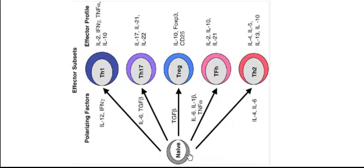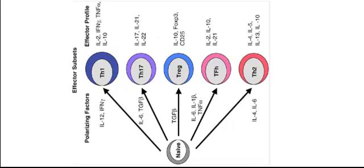Different signals stimulate naïve T cells to express different genes, and different genes produce different cytokines. Depending on what cytokines are produced, we get different types of T cells: T helper 1 cells, T helper 17 cells, regulatory T helper cells, follicular T helper (Tfh) cells, and T helper 2 cells. Each of these cells produces different types of cytokines, which will be discussed in the next video.